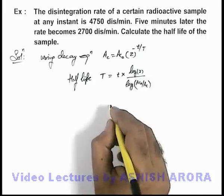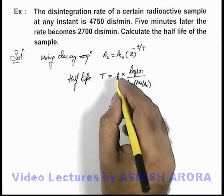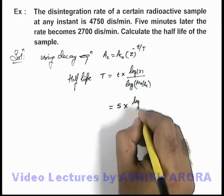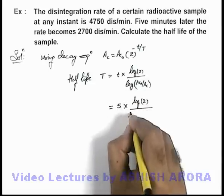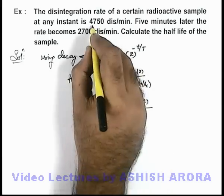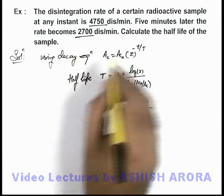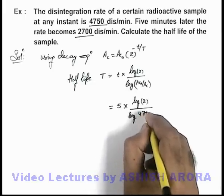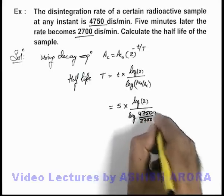If we substitute the values over here, time we are given as 5 minutes, so this is 5 multiplied by log 2, divided by log of activity not by activity. Initial activity is 4750 and after 5 minutes it is 2700, so it is 4750 by 2700.